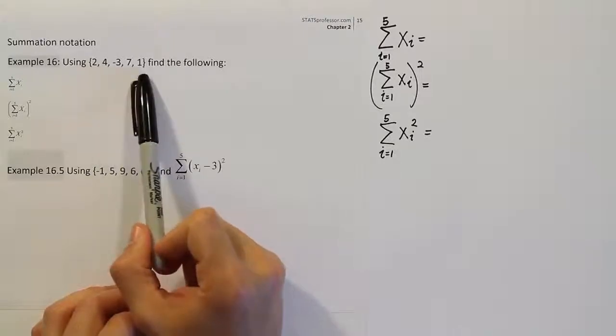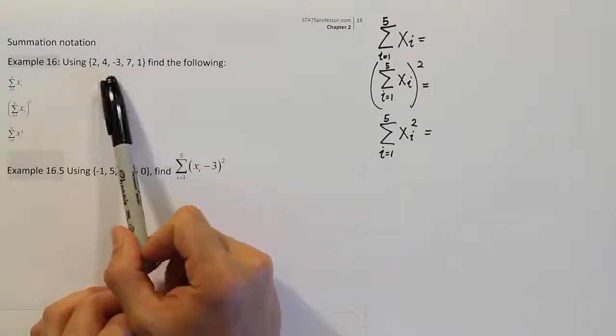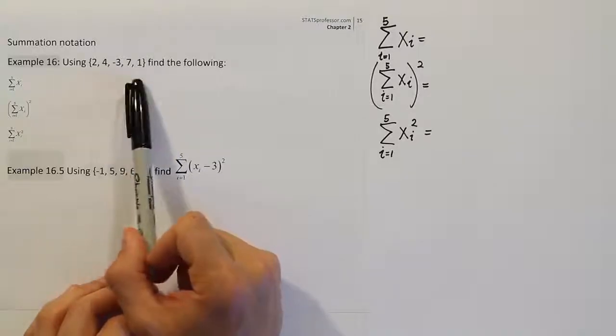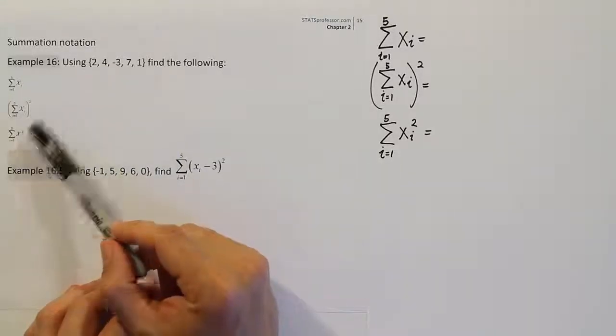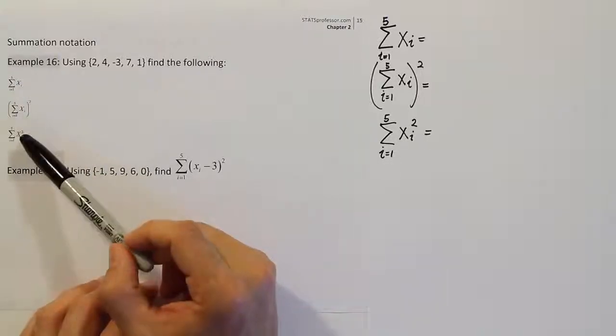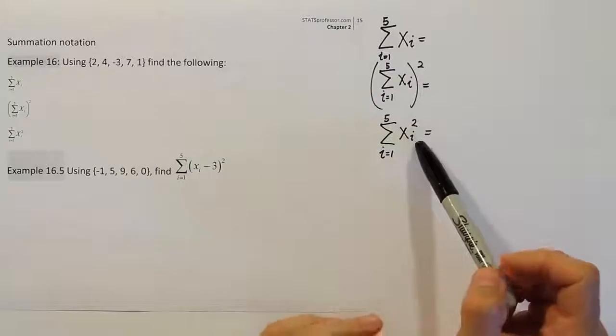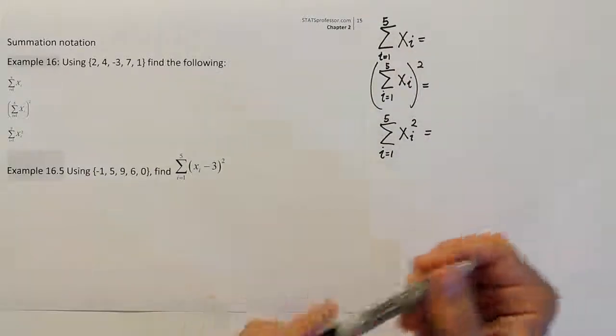They've given us some data values. We're going to call these x values. That's kind of the generic way to refer to data values here, is just to say they're x values. And we have three summations we're supposed to find, or three summation-related items we're supposed to find. And I've rewritten them here so we can see them a little better.